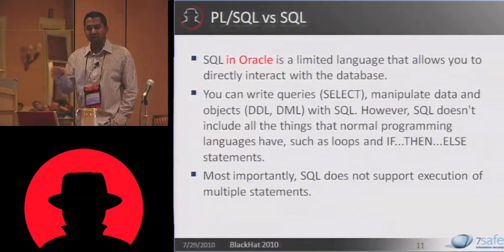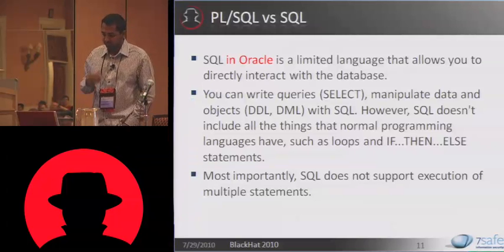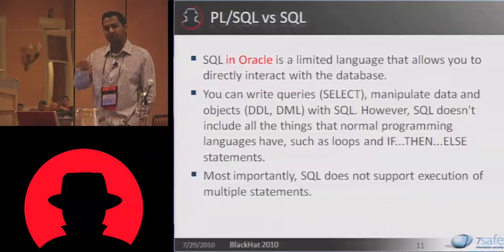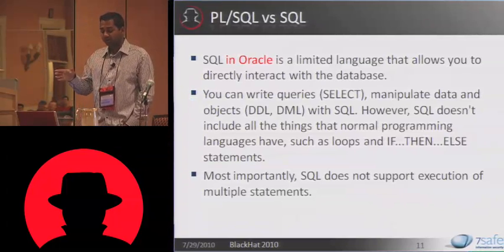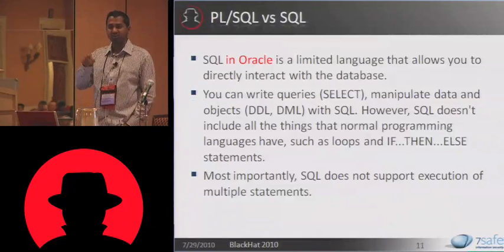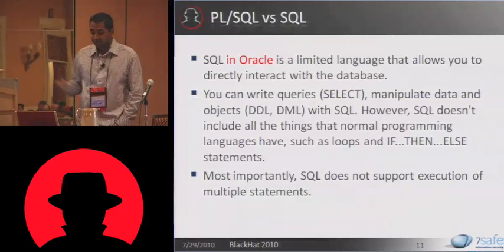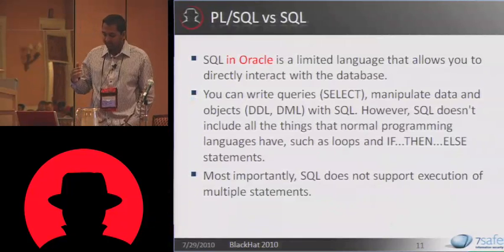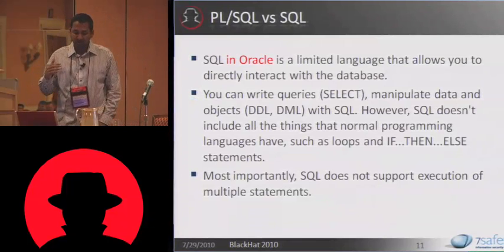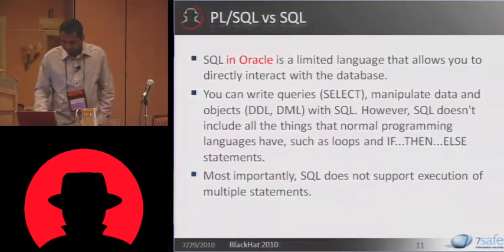Those familiar with MSSQL exploitation via SQL injections know that SQL in MSSQL is quite powerful — it supports nested queries, so you can stop one query and start another. But SQL in Oracle does not support that. If you find a SQL injection and the injection point is in a SELECT statement, you are stuck with that SELECT statement. You can't use a semicolon to execute a procedure or drop a database as you can in MSSQL. That has been the biggest barrier, and that's why there are not so many tools that exploit Oracle database.